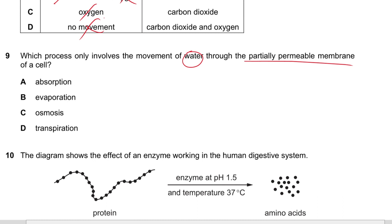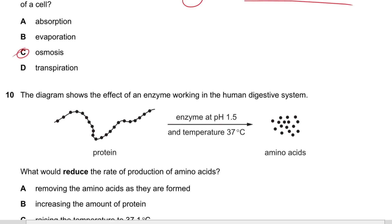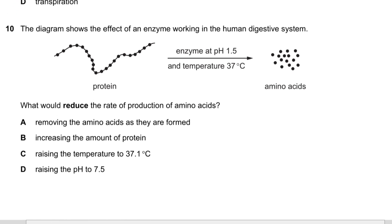Question 9: Which process only involves the movement of water through a partially permeable membrane? Once you see 'water' and 'partially permeable membrane,' the answer is osmosis — that's the definition. It's straightforward.